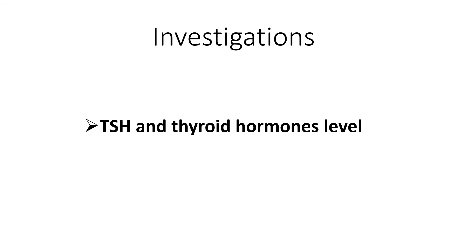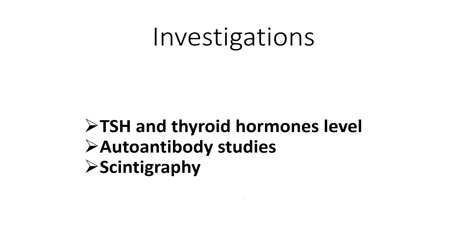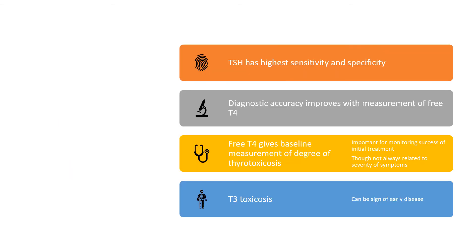Investigations include TSH and thyroid hormone levels as the basic workup, autoantibody studies as the second most important element, and scintigraphy (radioactive iodine uptake studies) third. TSH has the highest sensitivity and specificity; diagnostic accuracy improves with free T4 measurement, which gives a baseline of the degree of thyrotoxicosis and monitors treatment success. T3 thyrotoxicosis also exists and can be a sign of early disease, so initial investigations include TSH, T3, and T4.